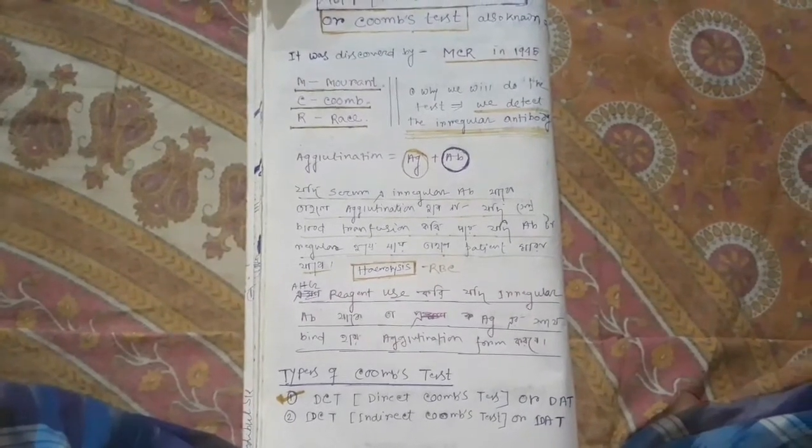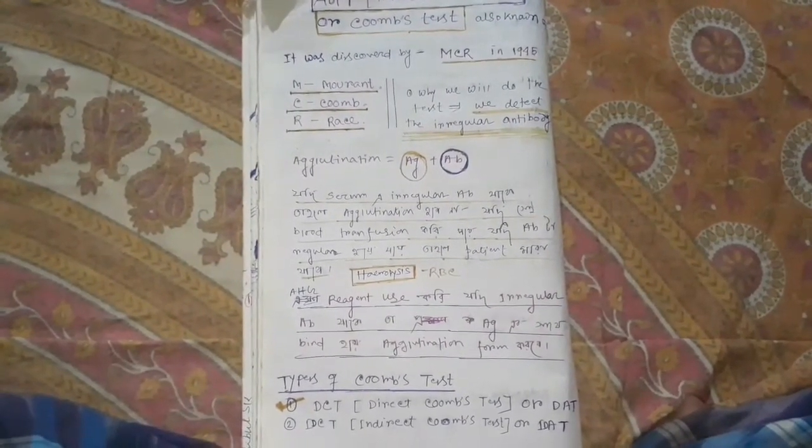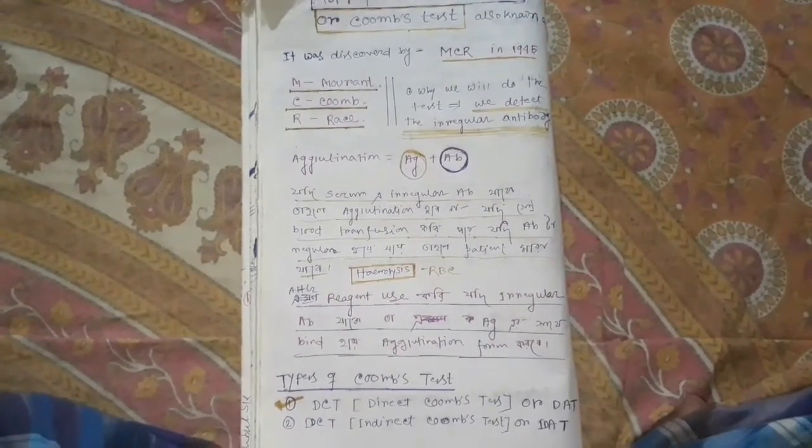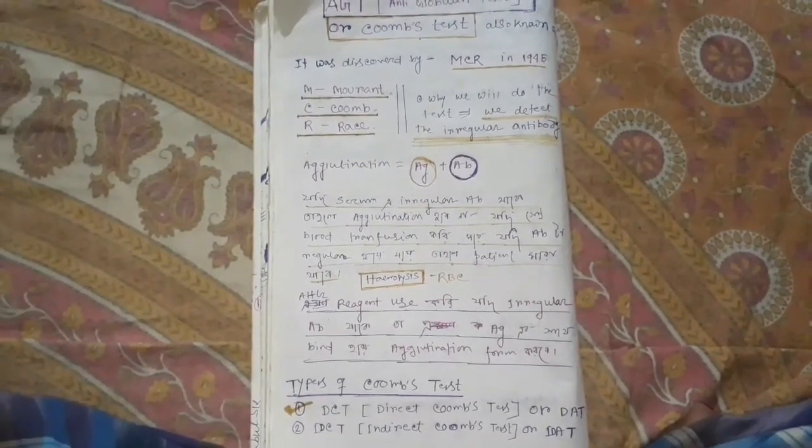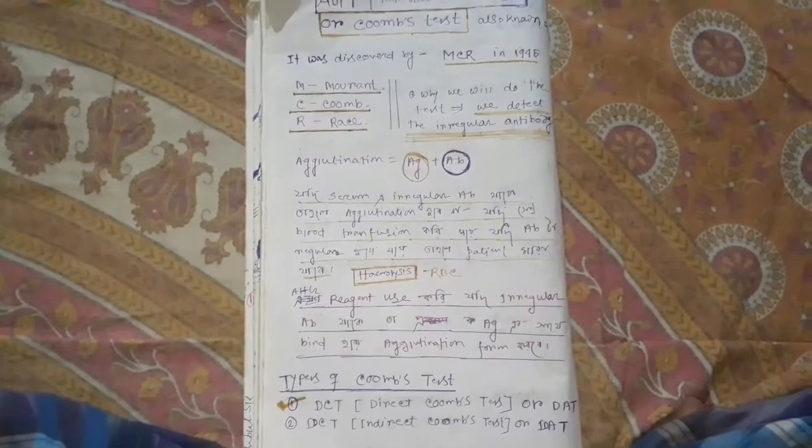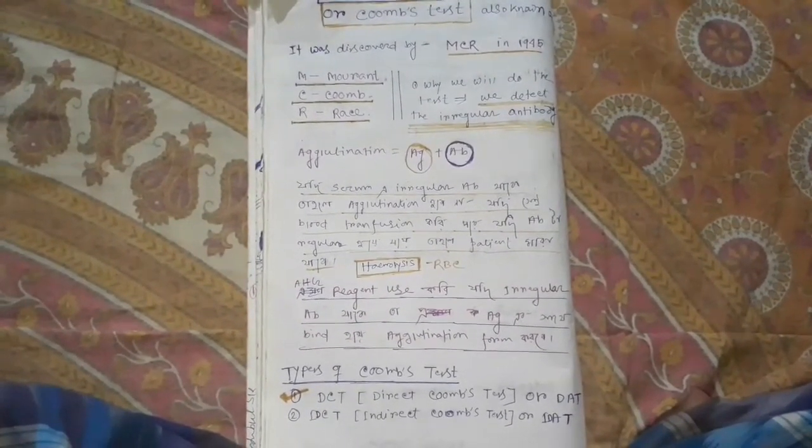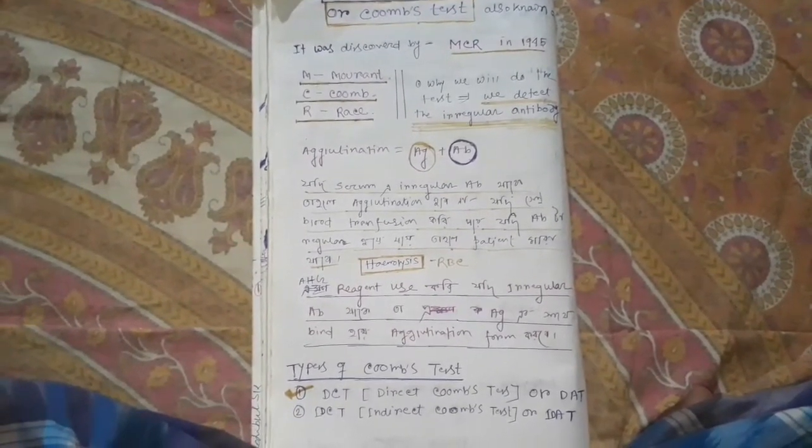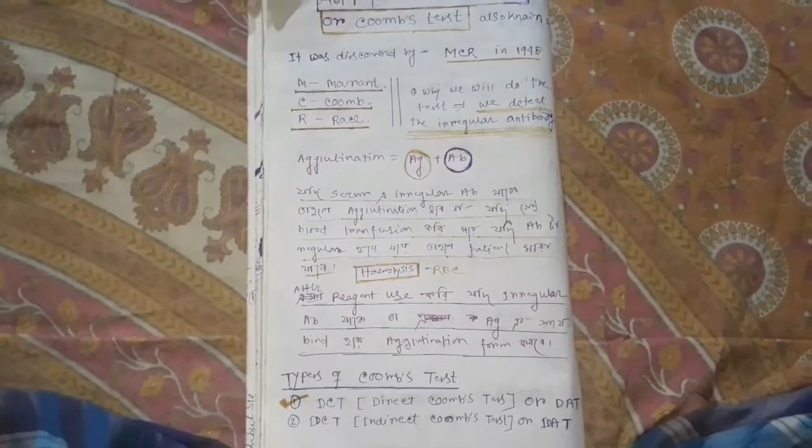How we use this reagent? We have to use the agglutination in the antigen-antibody reaction. If the patient has incomplete and irregular antibody present, we have to bind the antigen-antibody. If we get a negative result, we have to keep the blood in the patient.